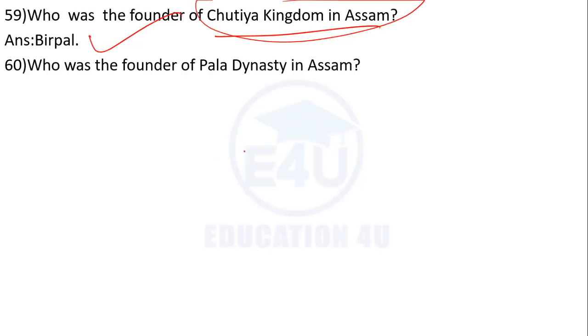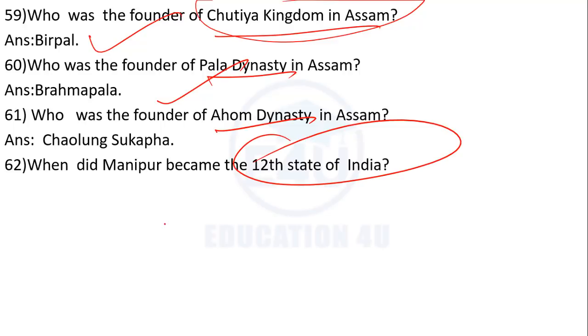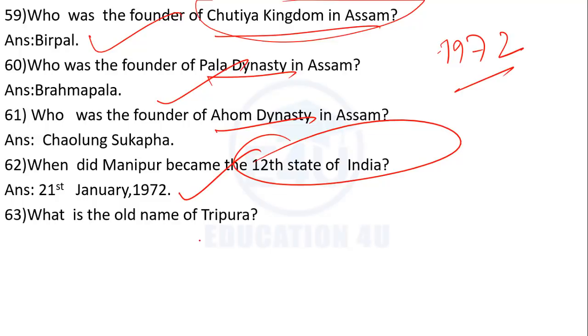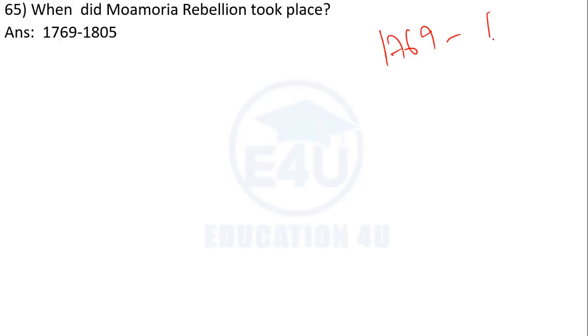The Sutiya kingdom founder was Birpal. The Brahmapal was the founder of the Pala dynasty. The founder of the Ahom dynasty was Saulung Sukapha. Manipur became the 22nd state of India on 21st January 1972. The old name of Tripura was Trikura.